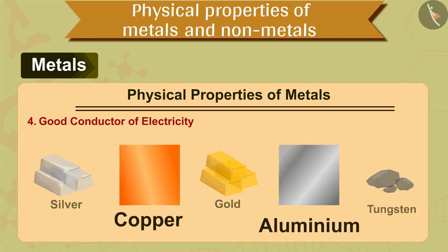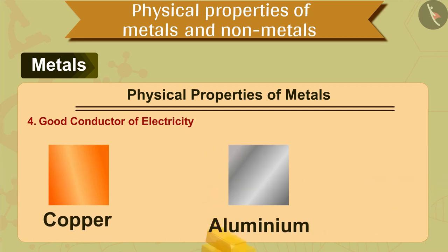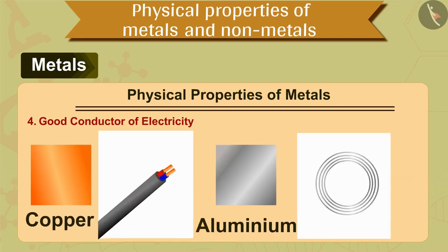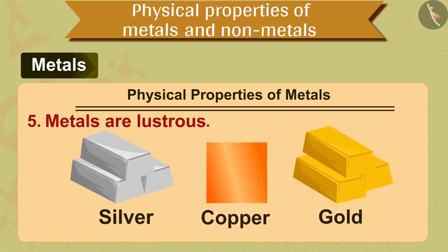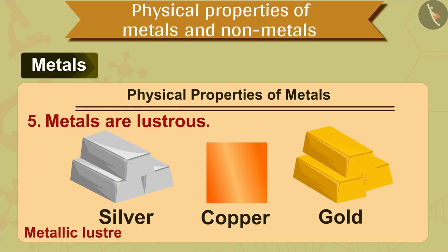The electric wires are mostly made of copper and aluminium because they are very good conductors of electricity and less expensive compared to silver. The fifth property of metals is that metals are lustrous. That is, they have a shiny surface and also they can be polished. For example, gold, silver and copper.